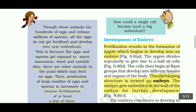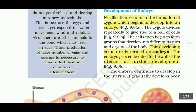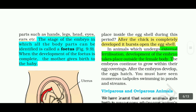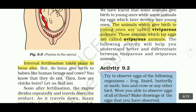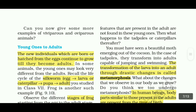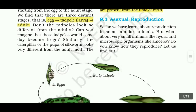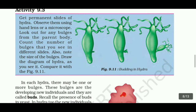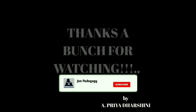We will see the remaining topics on the next video — that means development of embryo, viviparous and oviparous animals, young ones to adults, and the next topic, asexual reproduction. If you have any doubts, you can ask me in the comment box. I will meet you guys on the next video. Until then, bye-bye.